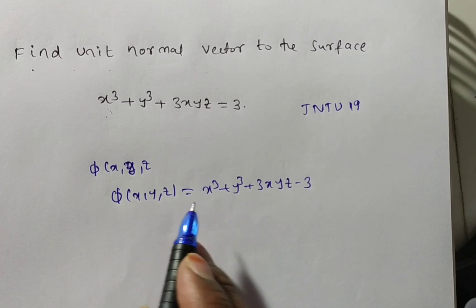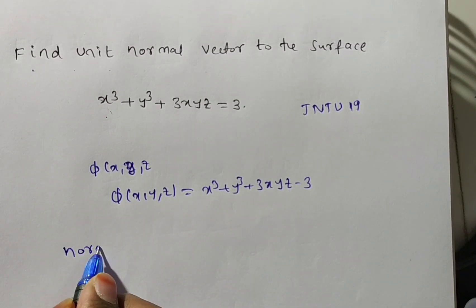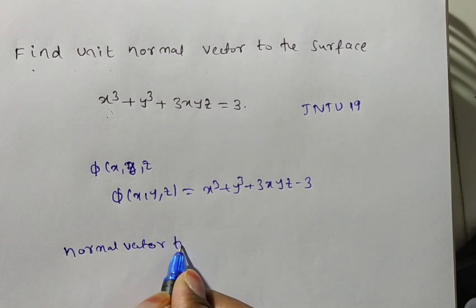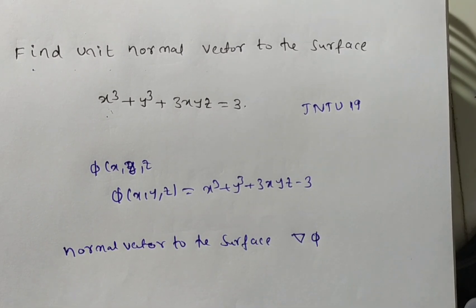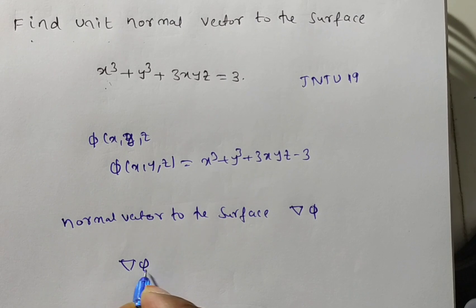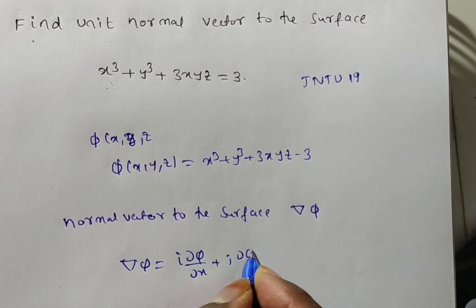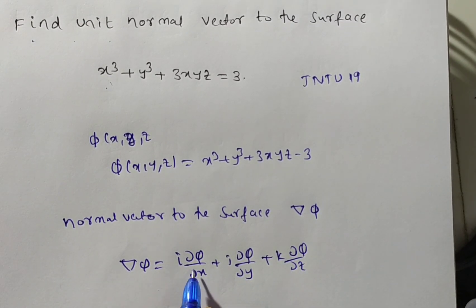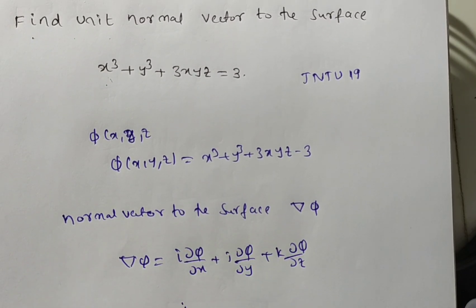For this surface we need to find out the unit normal vector. The normal vector to the surface is del φ. We have del φ = i(∂φ/∂x) + j(∂φ/∂y) + k(∂φ/∂z). Now we have to differentiate φ with respect to x, y, and z.